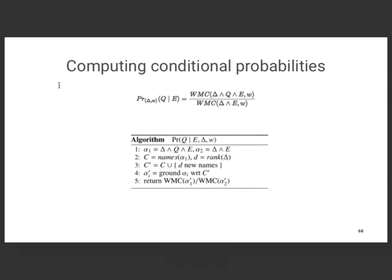What does the algorithm look like? For a conditional query you do a weighted model count of the query and evidence versus the evidence alone. In the open universe setting, you consider two formulas — delta with the query and evidence versus just delta and evidence — taking the names of the bigger formula. You consider the rank, then the set of constants (those already mentioned plus d new constants where d is the rank), ground with this new set of constants, and you're done. For a large class of queries this is identical to doing the infinite thing — it's a way to deal with infinite sets in a finite way.